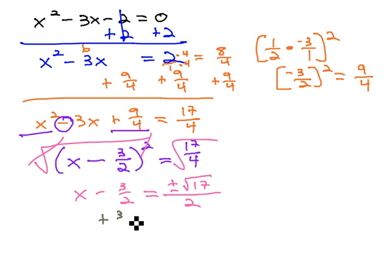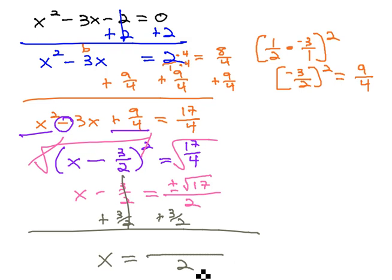And so, finally to finish, we'll add 3 halves to both sides, giving us x is equal to. Notice we have a common denominator already, so we can put it all over the common denominator of 2. And in the numerator, 3 plus or minus the square root of 17.